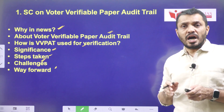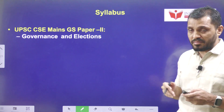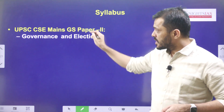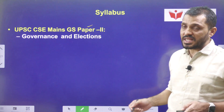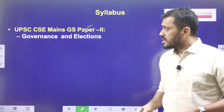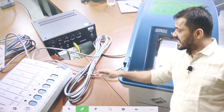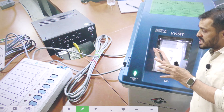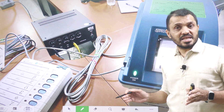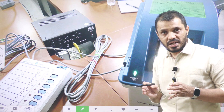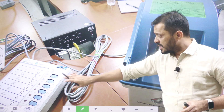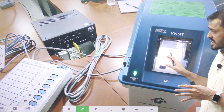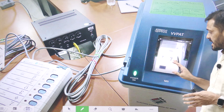First, let's try to understand how the VVPAT looks like. The syllabus mapping for this topic is related to gender studies paper two — governance and elections. VVPAT is a machine which is attached to the EVM. It is only related to EVM, not related to ballot box. Normally, VVPAT will be attached to the EVM and consists of a box as well as a display.